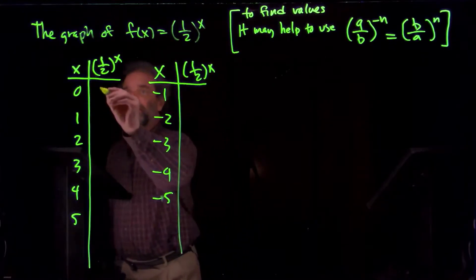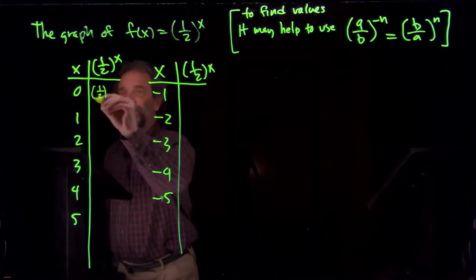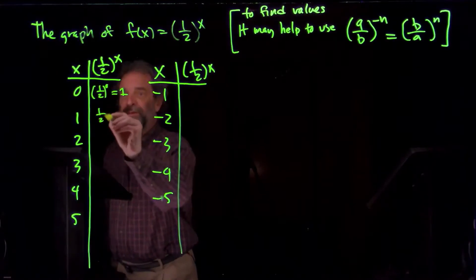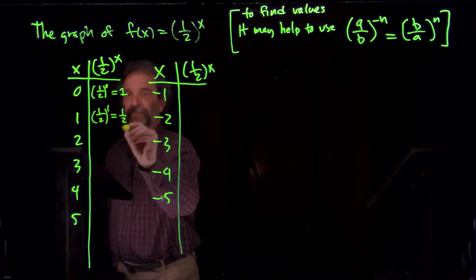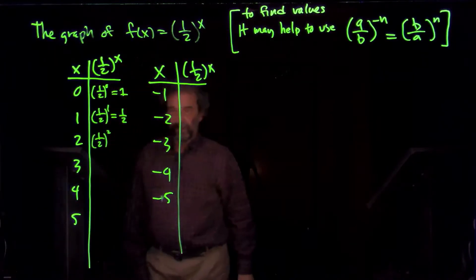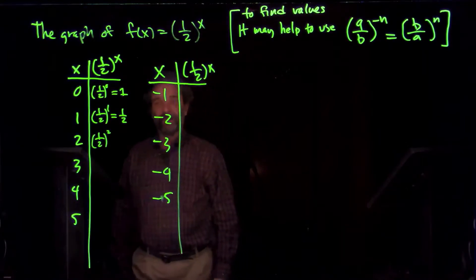Start on this side, one-half to the 0. Anything to the 0 is 1. One-half to the first, anything to the first is the thing itself. Then I'm going to square one-half. You square the top, you get 1. You square the bottom, you get 4.